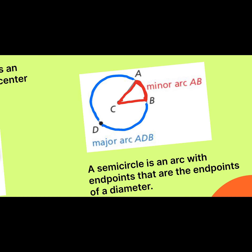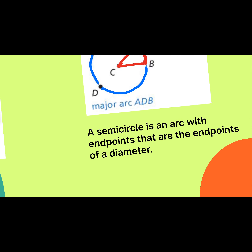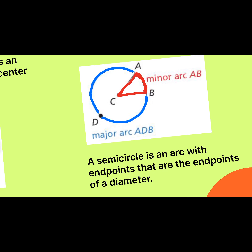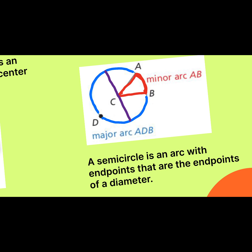Now, there's not just two categories. We have minor arc, which is the smaller one, and major, which is the larger. And also, we would consider it just to be a semicircle when the arc is at exactly 180 degrees. So then there is no minor, there is no major — we just would label it a semicircle.